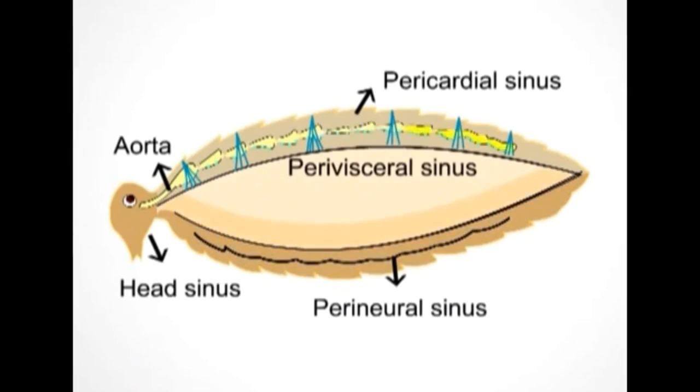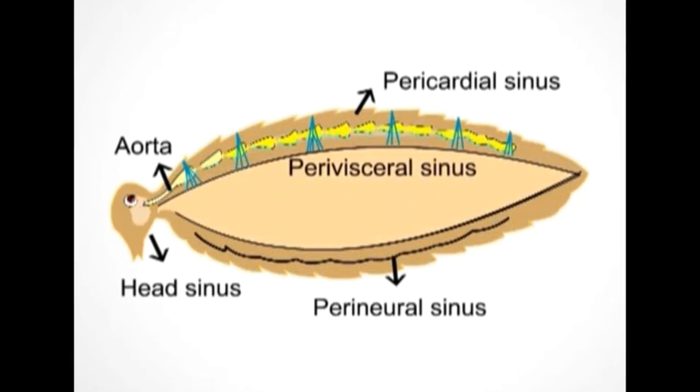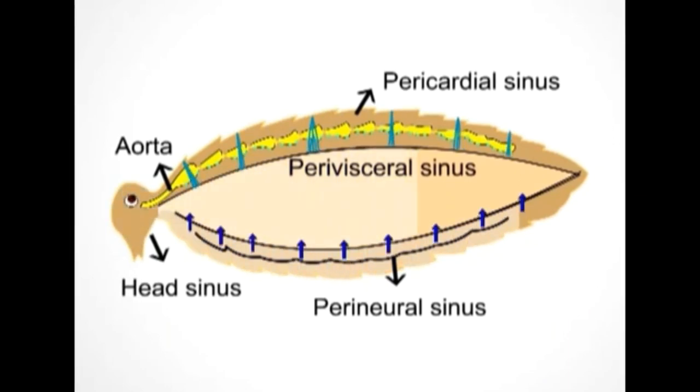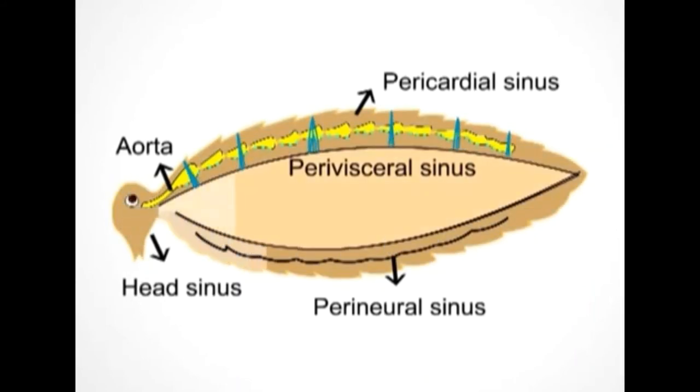Peristaltic contractions of heart move the blood from posterior chambers to anterior chamber. From the first chamber of the heart, blood moves through an aorta into the head sinus. From the head sinus, blood flows into the body cavity (that is, into the perivisceral and perineural sinuses). From here it goes into the pericardial sinus and the cycle is repeated.